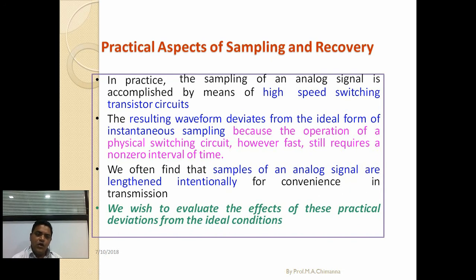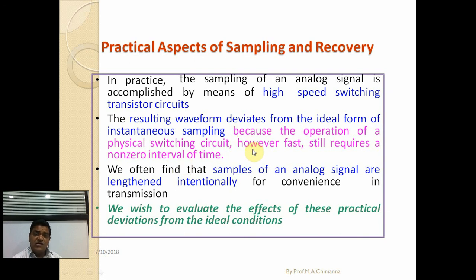In the practical aspects of sampling and recovery: in practice, sampling of an analog signal is accomplished by means of high-speed switching transistor circuits. The resulting waveform deviates from the ideal form of instantaneous sampling because physical switching circuits, however fast, still require a non-zero interval of time. Fine samples of analog signals are often lengthened intentionally for convenience in transmission, so we wish to evaluate the effect of these practical deviations from ideal conditions.